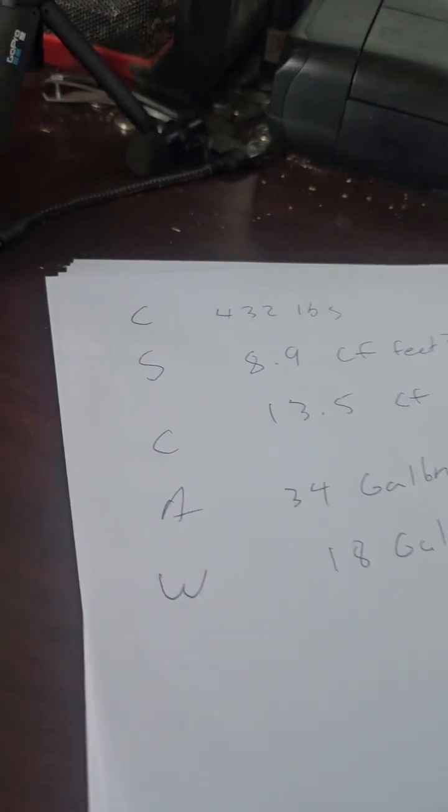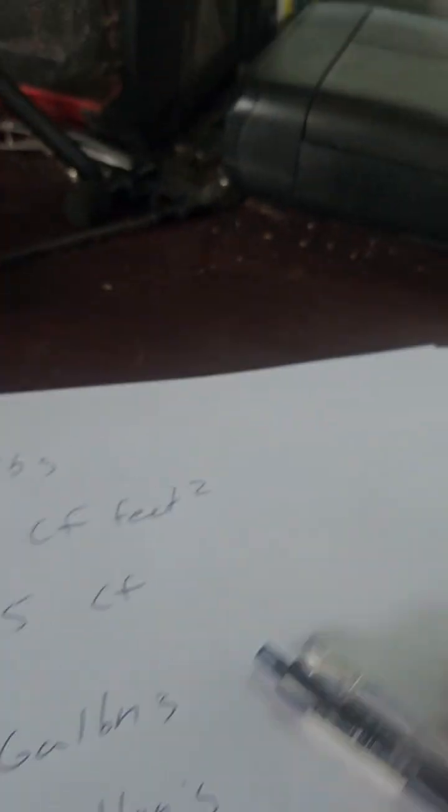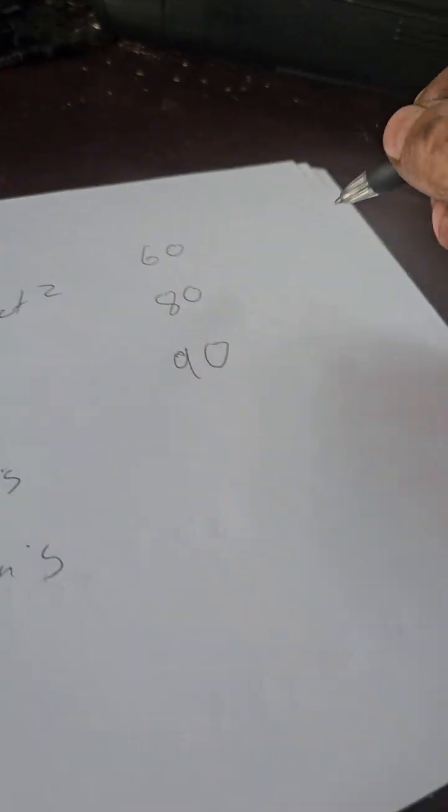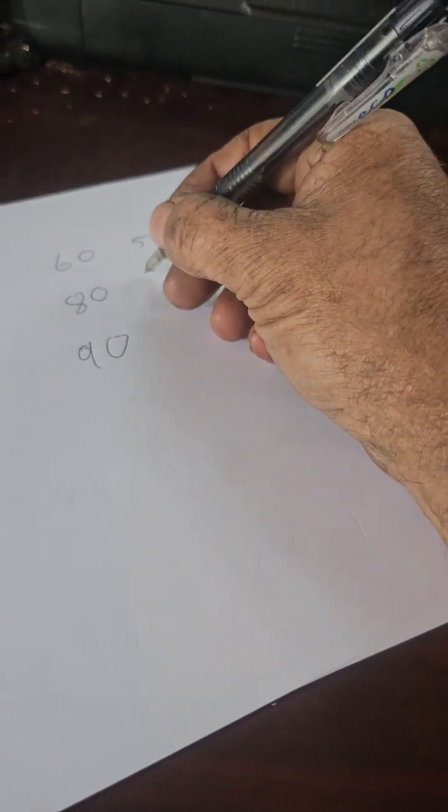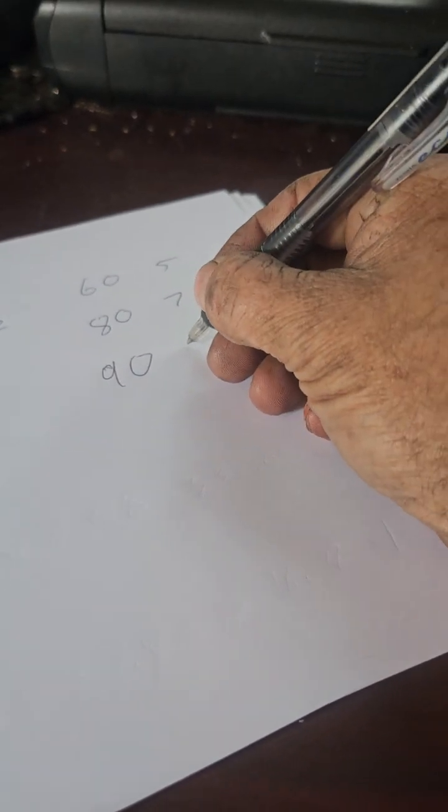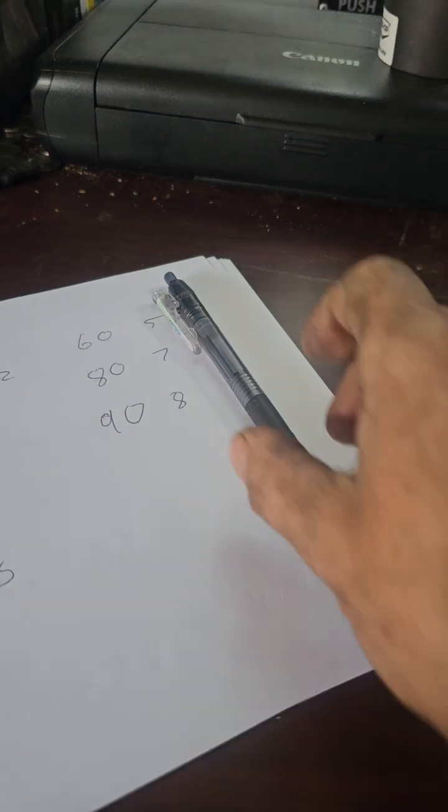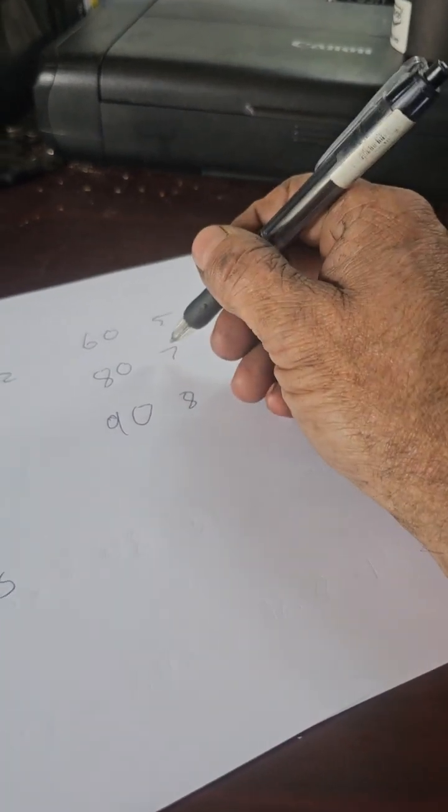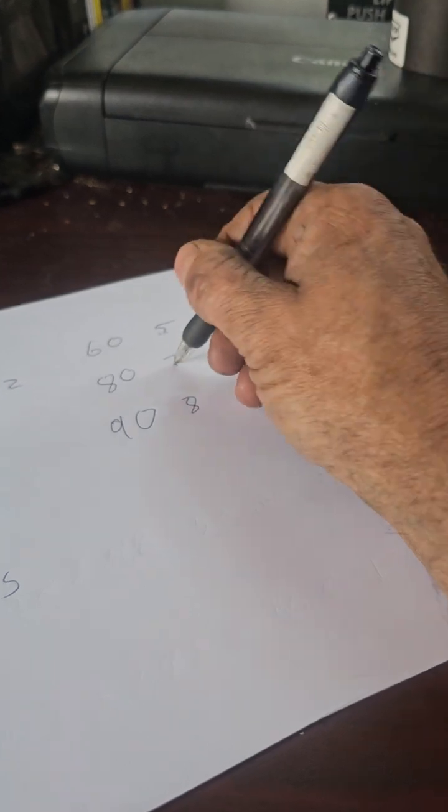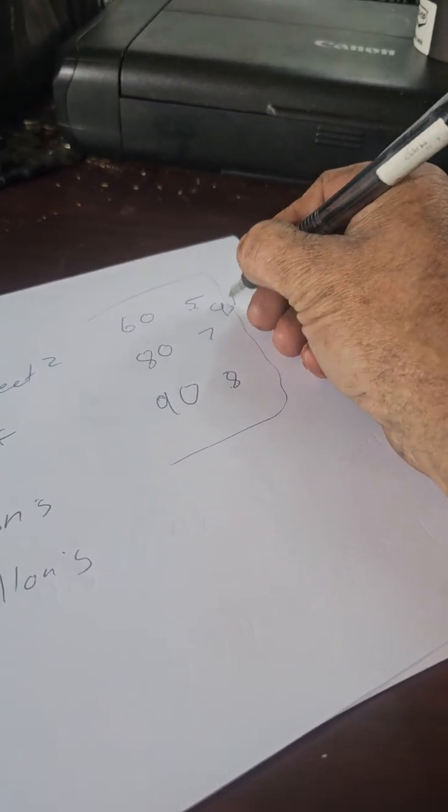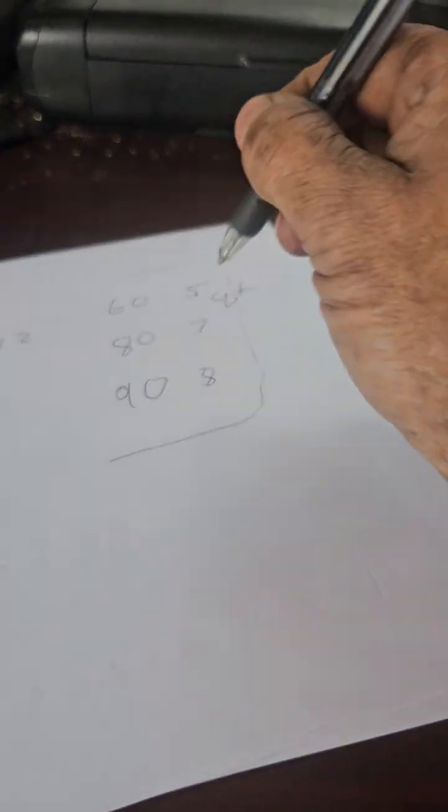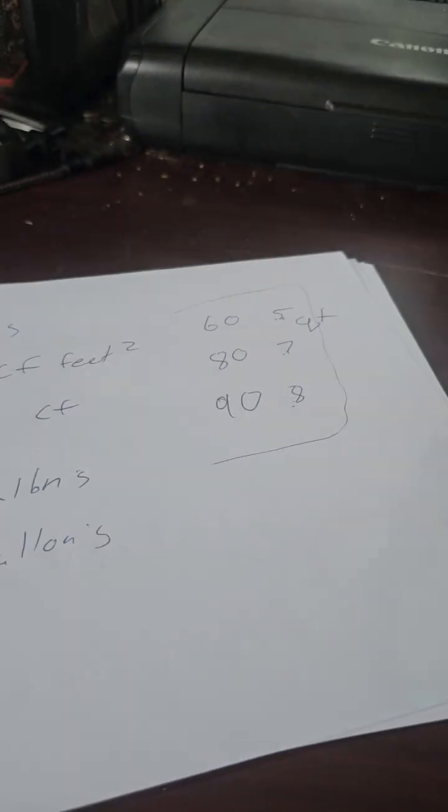Now for pre-mix, for 60 pounds, 80, and 90, which are the most common for pre-mixes. If you want to know how much water to add to these things, that's 5 quarts, 7 quarts, and 8 quarts. Those are your rule of thumb for mixing those.